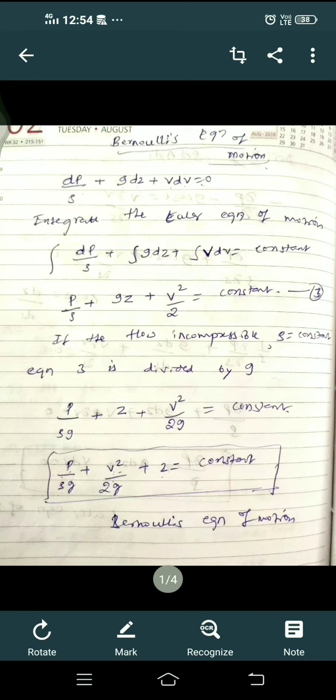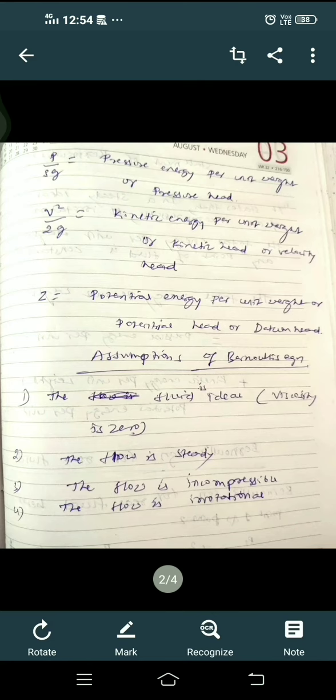Here we're having three terms: p/(ρg), v²/(2g), and z. If you define these three terms, p/(ρg) means the pressure energy per unit weight, or pressure head.